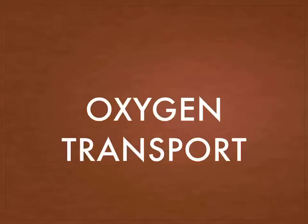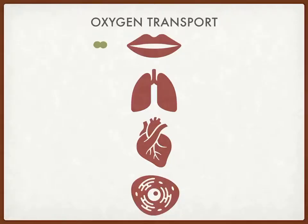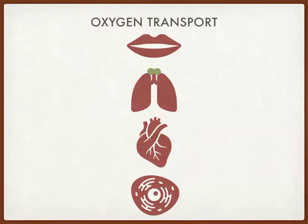A short video about oxygen transportation and the Fick Principle. We know that we need to have a good atmosphere, so we need to have about 20% oxygen in the atmosphere. We breathe that in through our mouth and nose, goes down through the trachea, into the lungs.